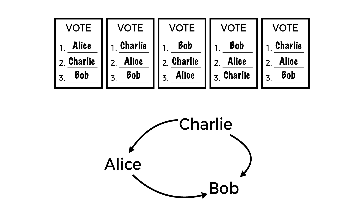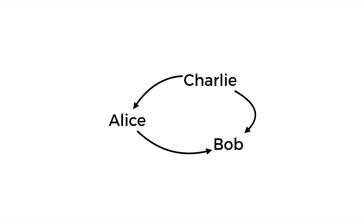This structure we've created is what we call a graph, where we have each individual candidate and arrows — otherwise known as edges — pointing from one candidate to another if the first candidate would have beaten the second. Using just this graph, without looking at the ballots anymore, we can determine the winner. The winner is the source of the graph: the person who has no arrows pointing at them but does have arrows pointing at others. Charlie has arrows pointing to Alice and Bob, but no arrows point at Charlie, so Charlie is the winner.